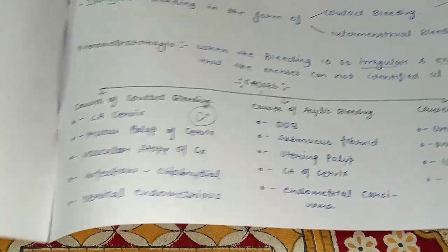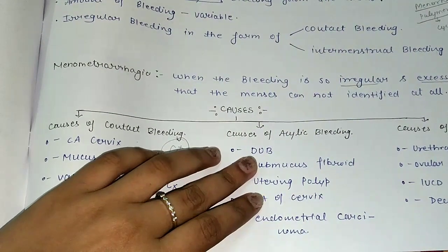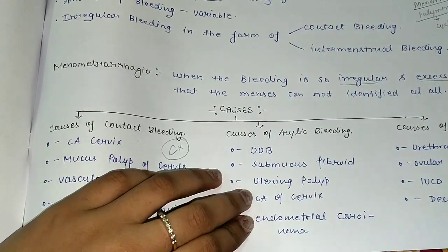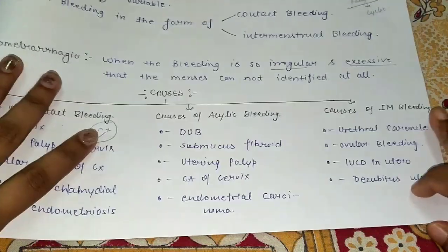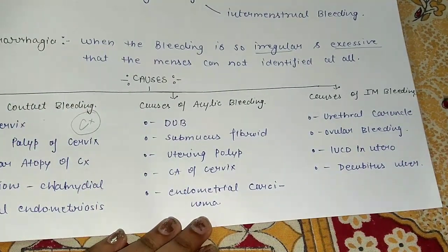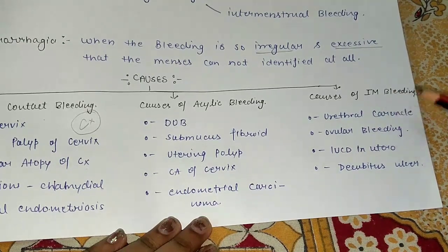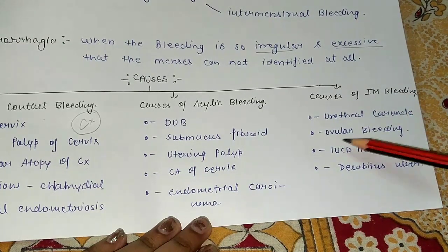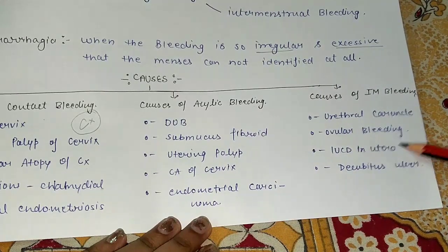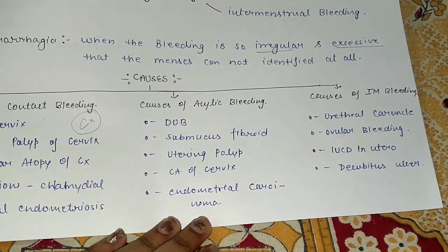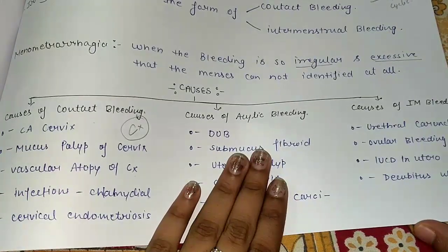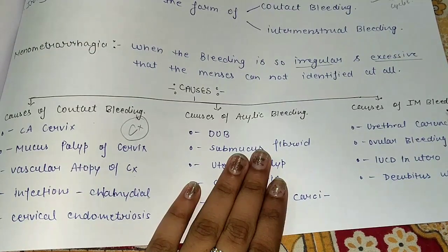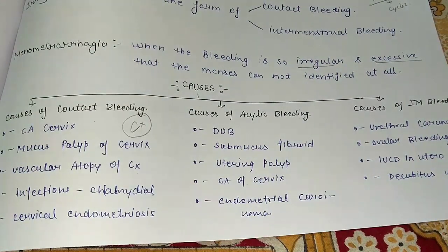The causes of acyclic bleeding include dysfunctional uterine bleeding (DUB), submucous fibroids, uterine polyp, carcinoma of the cervix, and endometrial carcinoma. The causes of intermenstrual bleeding include urethral caruncle, ovulatory bleeding, IUCD (intrauterine contraceptive device), and decubitus ulcer. These are the different types of causes for contact bleeding, acyclic bleeding, and intermenstrual bleeding.